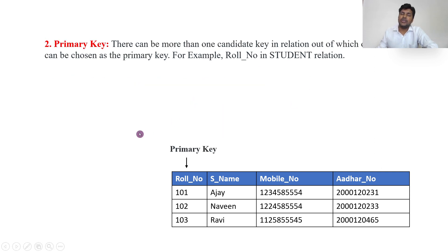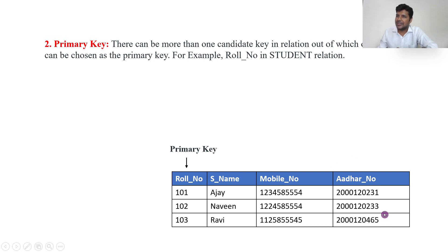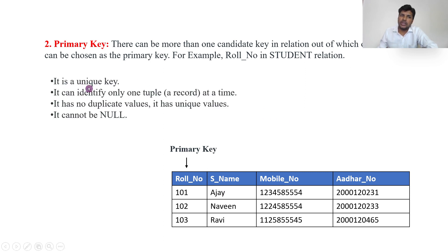Now let us see primary key. There can be more than one candidate key in a relation, out of which one is chosen as the primary key. For example, from three candidate keys — roll number, mobile number, and Aadhar card — I am choosing one as the primary key. The major difference between primary key and candidate key is that primary key will not be null. It is unique, identifies only one record, has no duplicate values, and cannot be null. Candidate key, however, can be null.